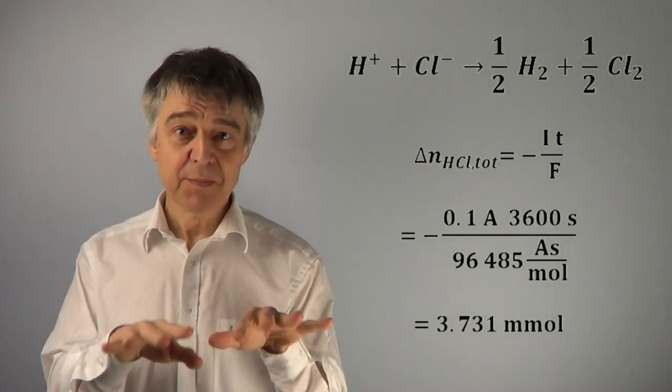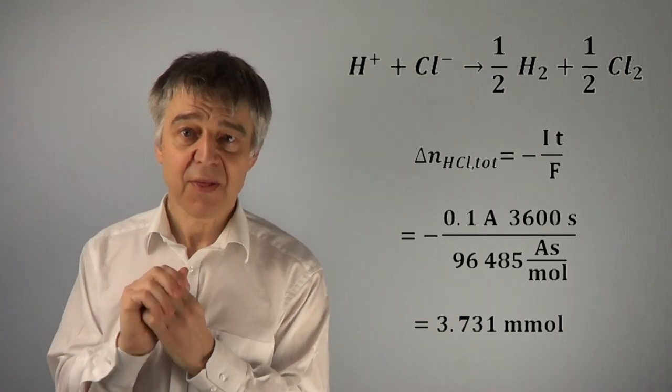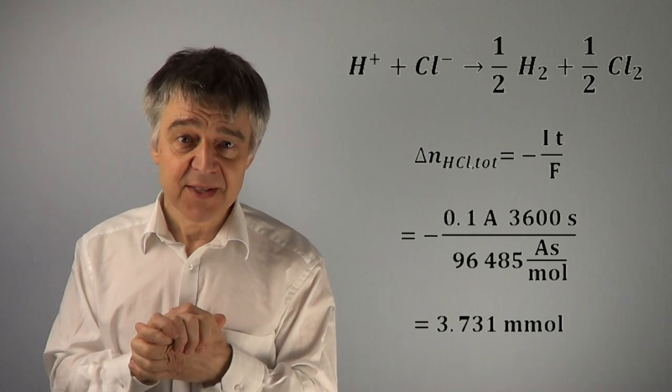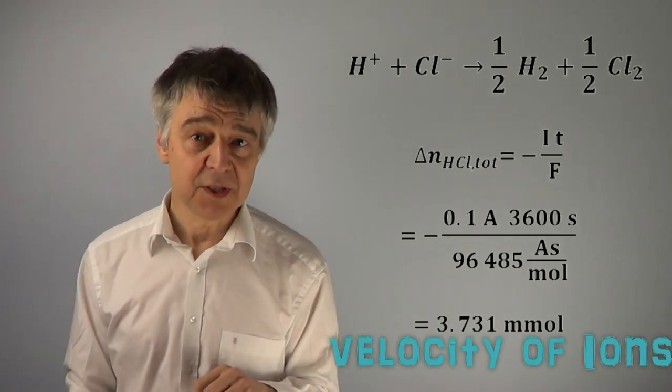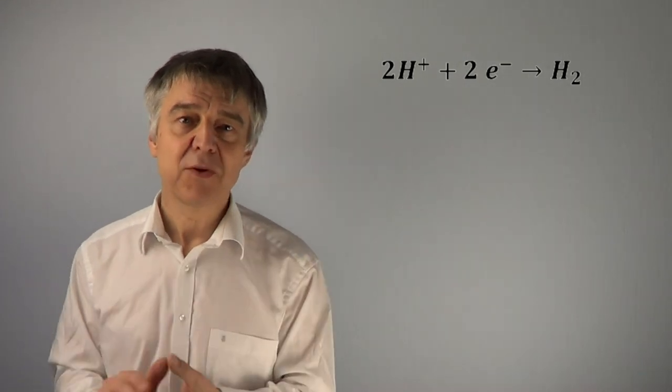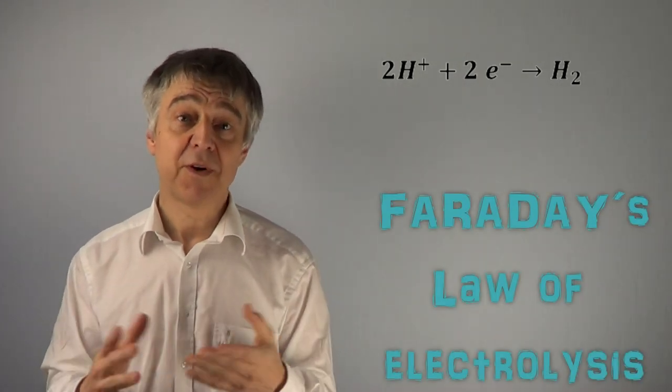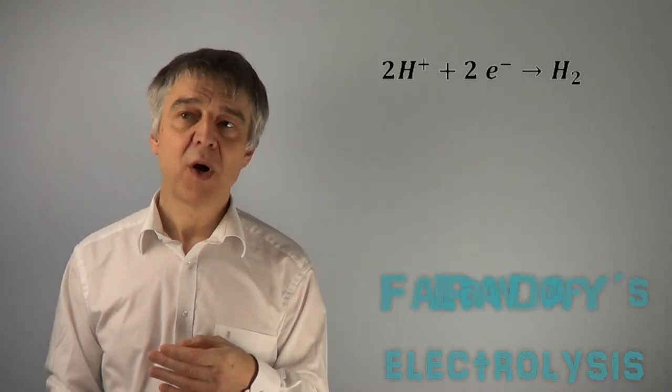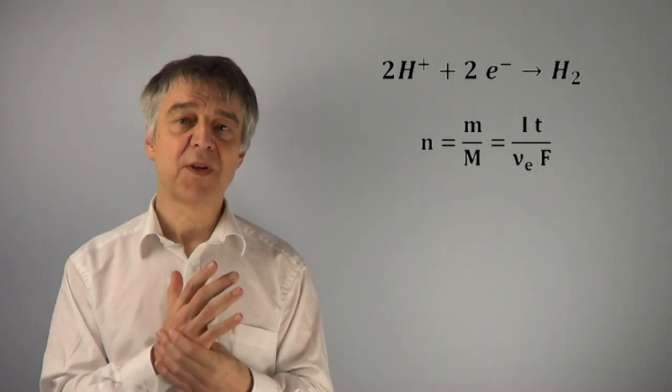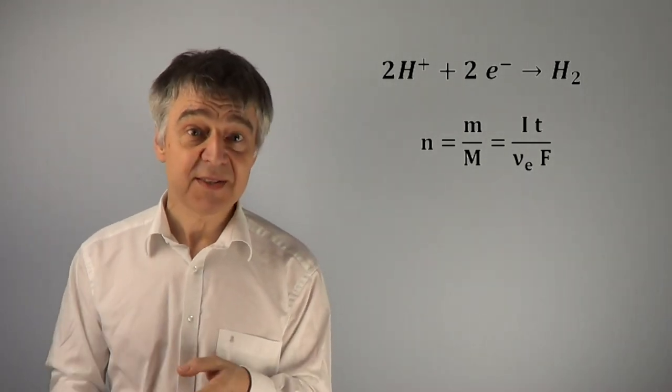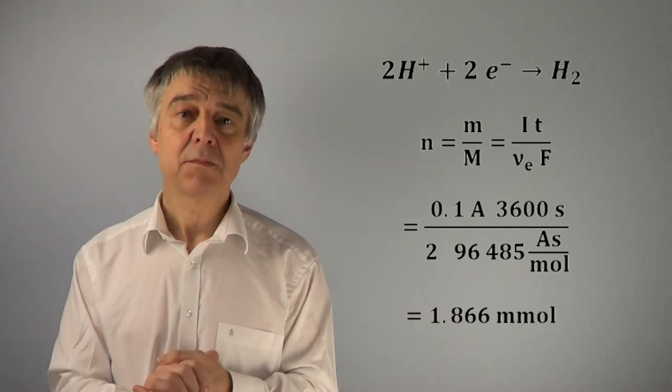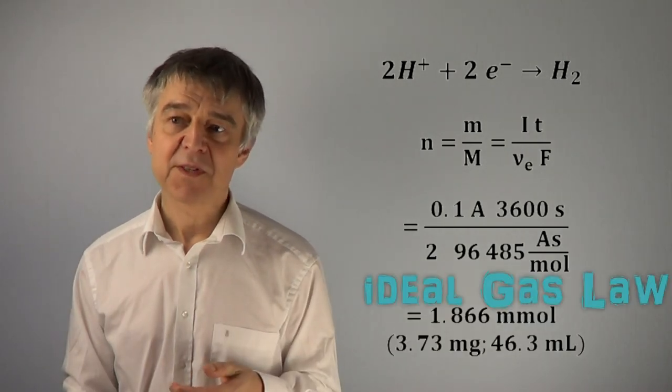But they do not disappear equally from the anode and cathode compartments. Due to the different velocities of the ions, these concentration changes will be different. The amount of H2 formed at the cathode can be determined according to Faraday's law. 3.731 mmol of flowing electrons are sufficient to reduce half of it, 1.866 mmol of H2, which is about 46 mL.